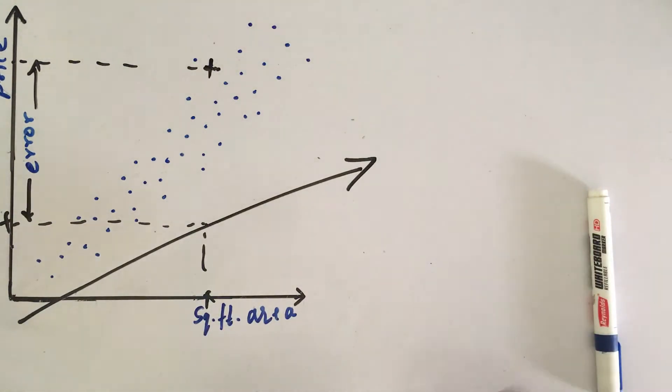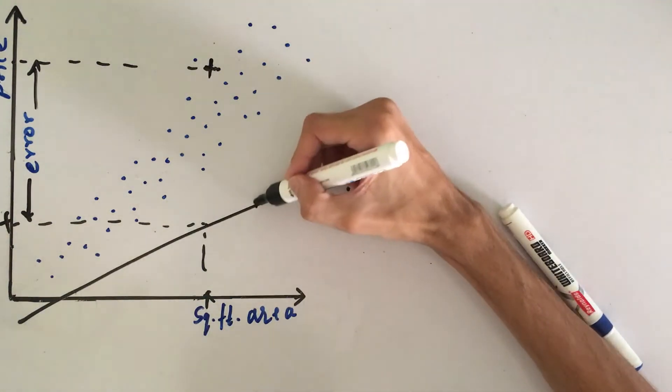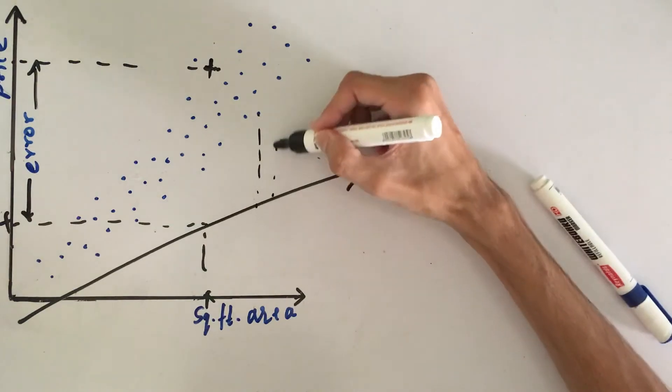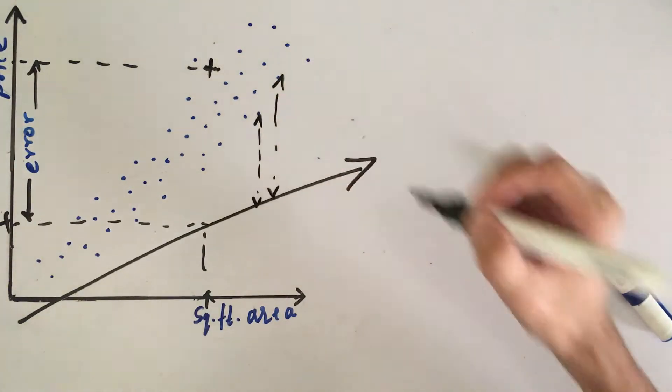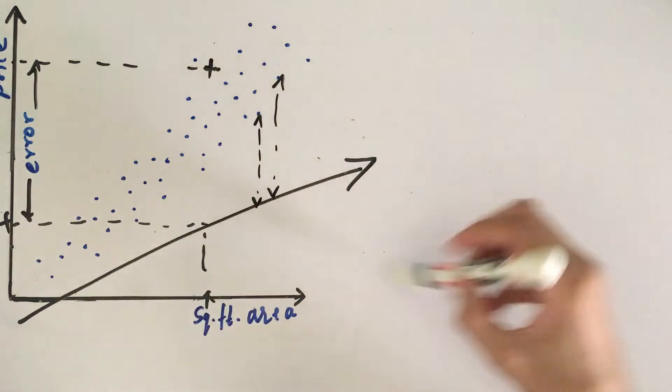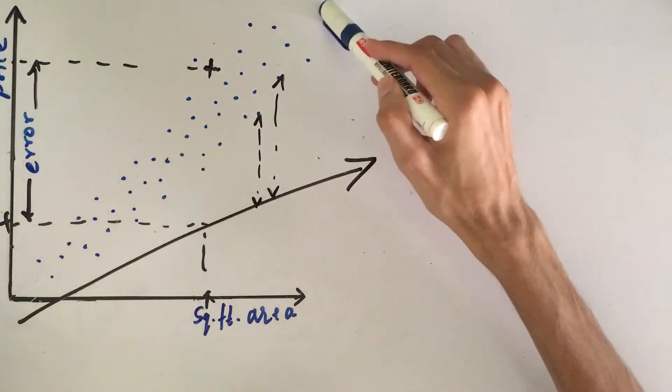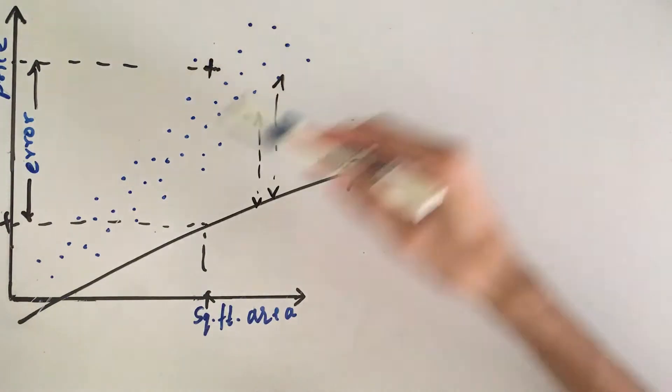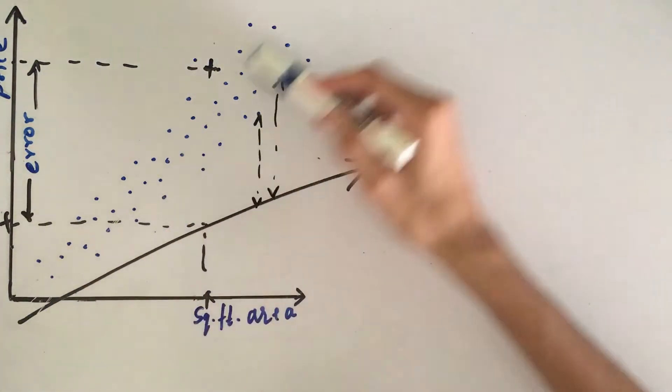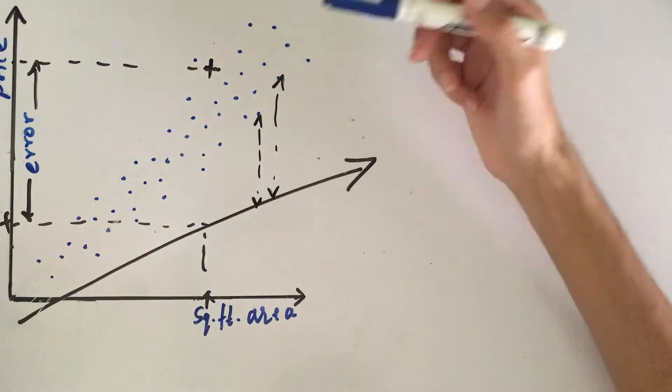Similarly, the error for this point would be this, for this point would be this, right? These are the errors for all these points. So, basically, the line that will fit the data set properly, that line is going to have the least error. This line has large error. But the line that will fit our data set will have the least error.